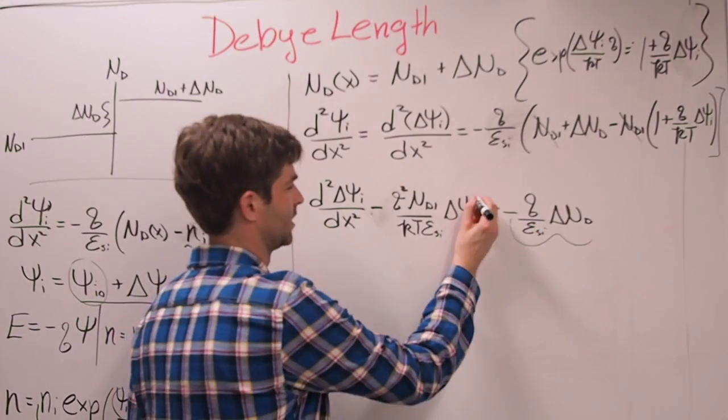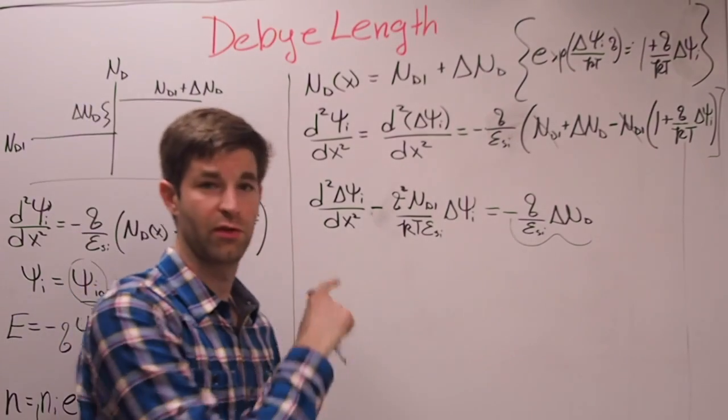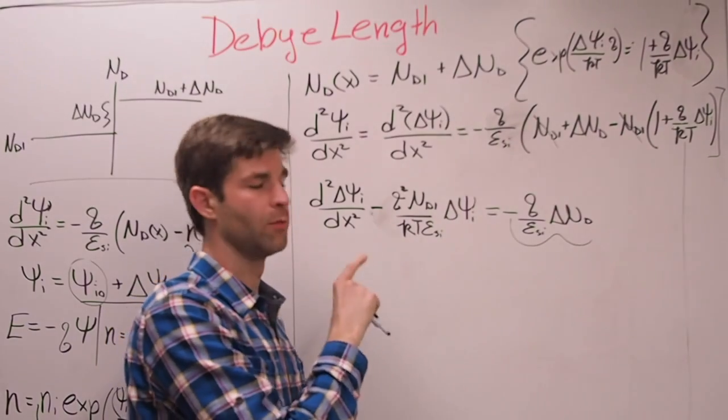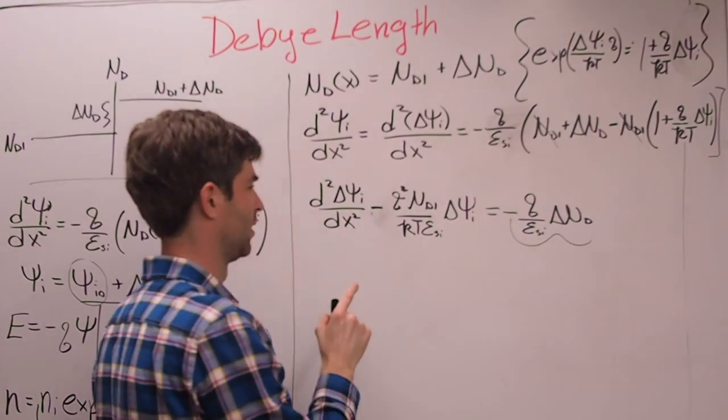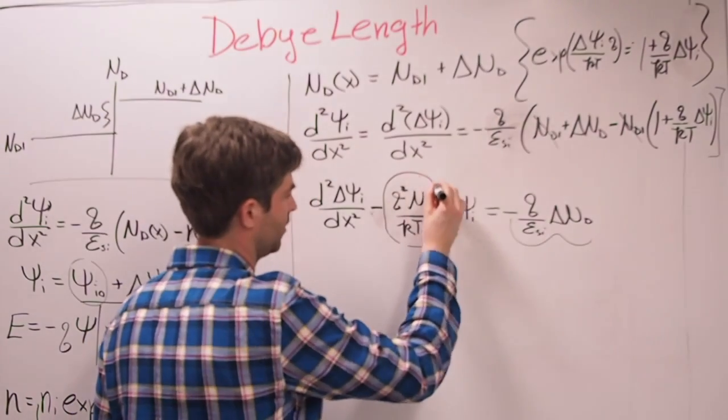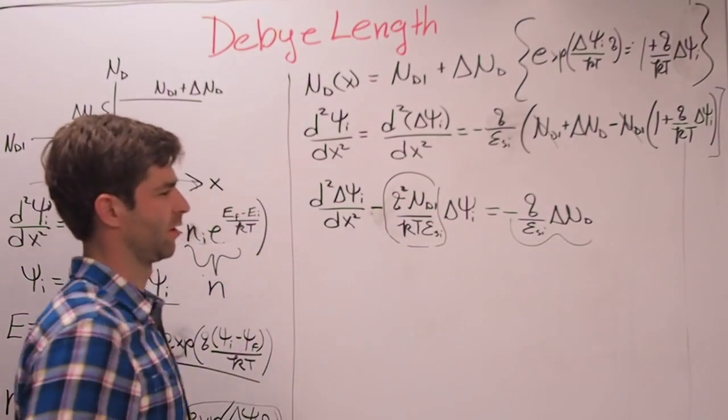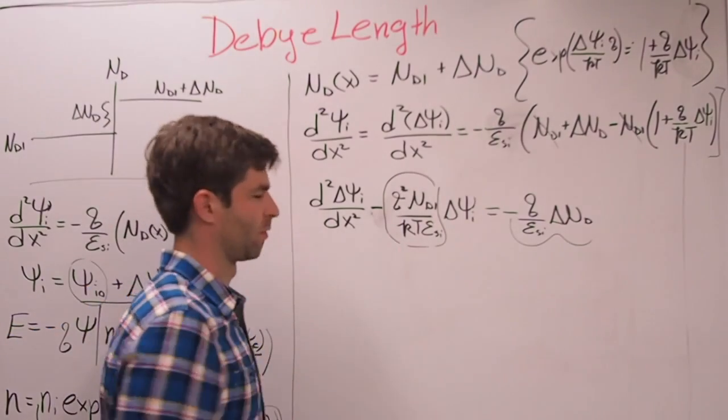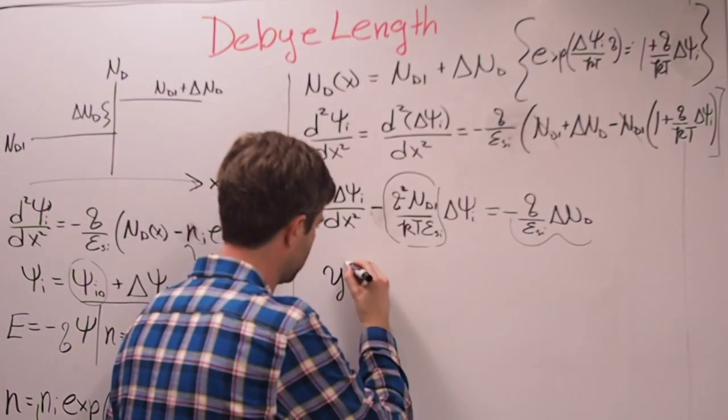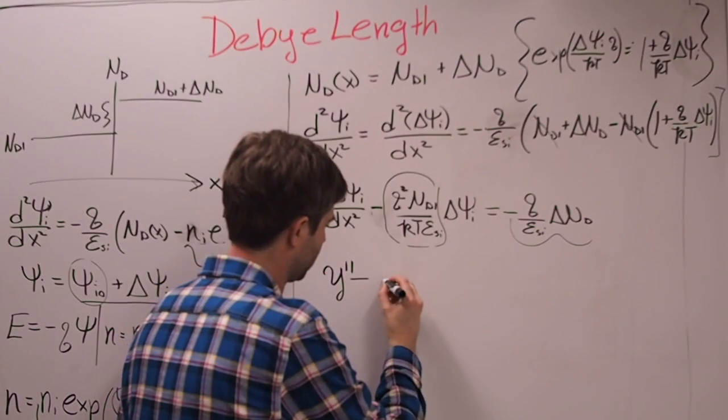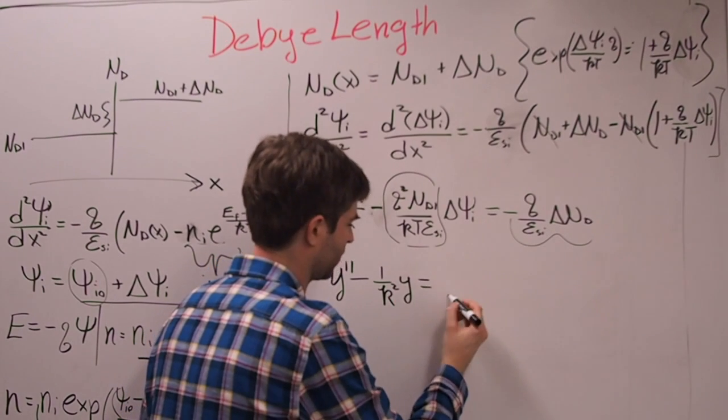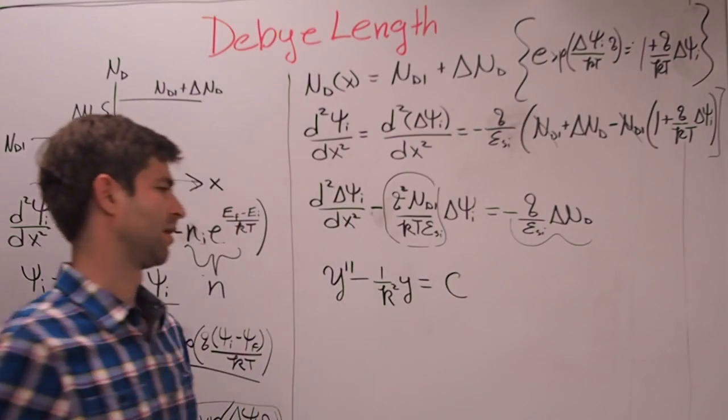This is a constant right here. And what I want to do is I want to solve delta phi I, solve this second order non-homogeneous differential equation in terms of phi I. And you can rewrite this whole term here is a constant.